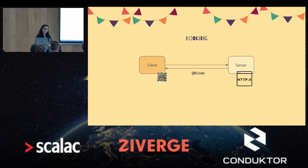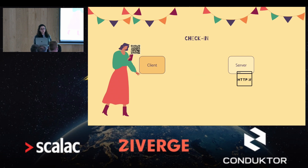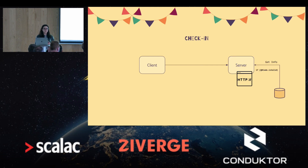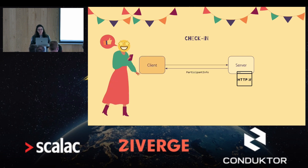The participant will save the QR code, and at the day of the event, the participant will present the QR code via the client. The client will send a GET HTTP request to the server and we will look up if the QR code is valid and that the participant exists in the database. If everything is fine, we will return success; otherwise it will fail.